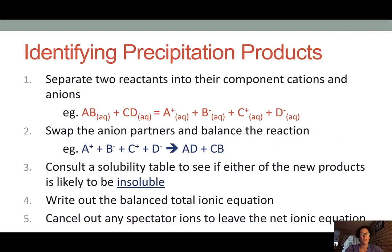So to sum up, a precipitation reaction can be identified by following these five steps and simplifying down to a net ionic equation. In the first step, we look at what the two reactants are and separate them out into their component cations and anions. Now to predict whether any product is going to form, we are going to swap the partners. So if cation A started out with anion B, we'll see what would occur if we had a reaction between cation A and anion D, and similarly what would happen if we combined C with B.